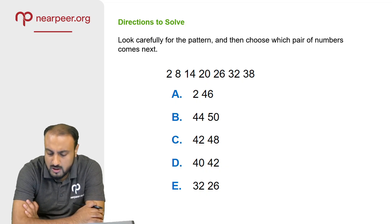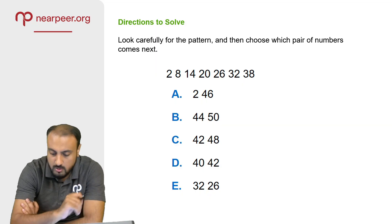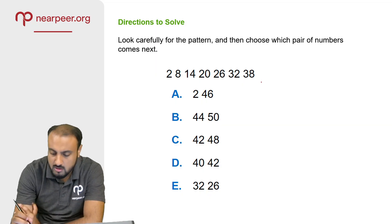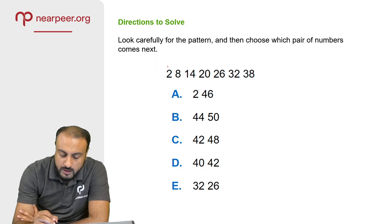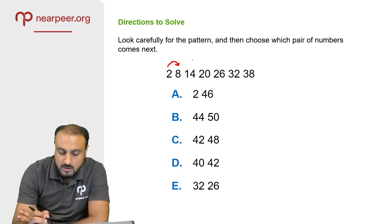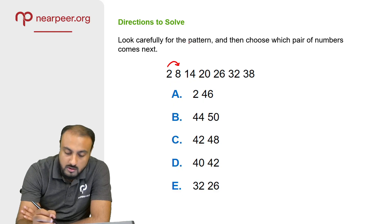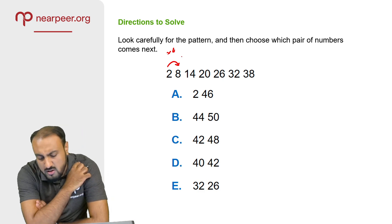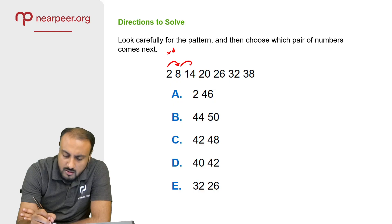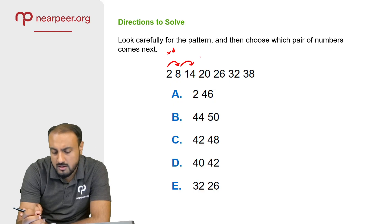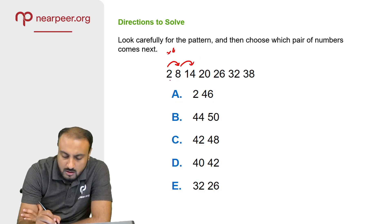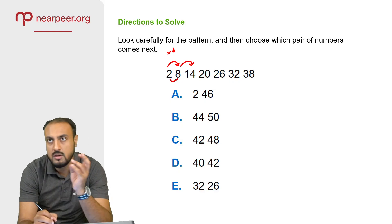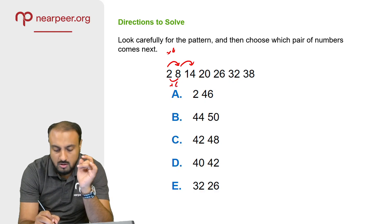The next series is: 2, 8, 14, 20, 26. Then 38. What do you think is the pattern here? From 2 to 8 is plus 6, from 8 to 14 is plus 6.